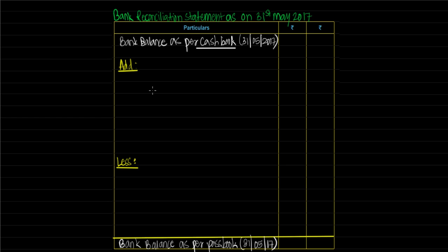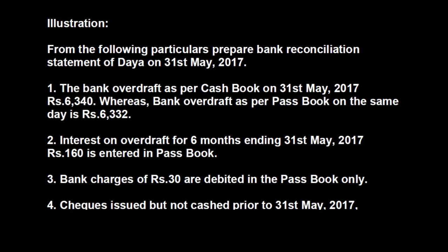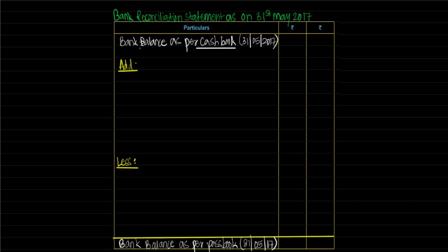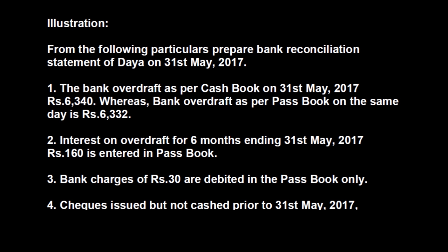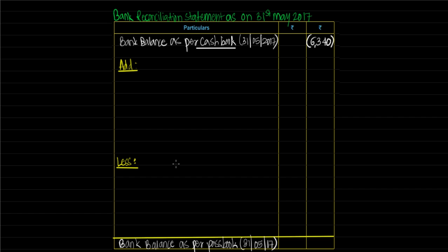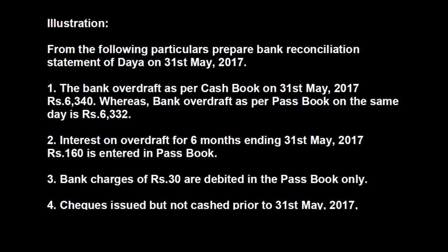Though there is a difference in both the books, it is not that one book shows correct balance and the other shows incorrect balance — both books are correct. There are some reasons due to which there is a difference, and this statement lays down all such reasons and gives us a correct picture of why there is such difference. First, the bank overdraft as per cashbook on 31st May 2017 is Rs 6,340. We have written bank balance as per cashbook as 6,340 — but note that this balance is overdraft, so we return it as a negative figure. The bank overdraft as per passbook on the same day is Rs 6,332.